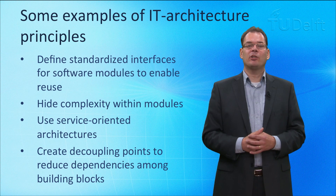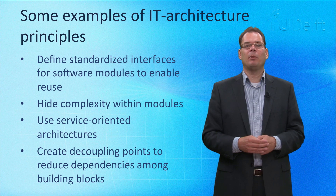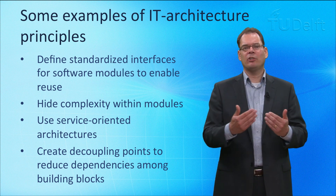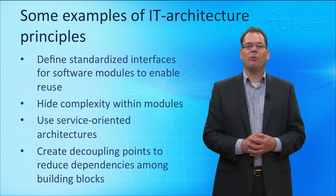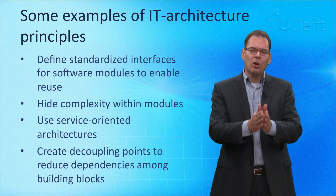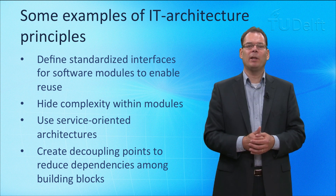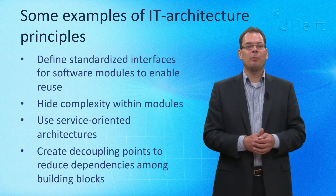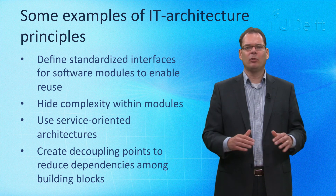Some examples of principles for creating flexibility in IT architectures are the use of standardized interfaces for building blocks. If interfaces do not change, building blocks can be replaced by other building blocks without affecting the system. To ensure that interfaces are stable, the complexities should be within a module. Service-oriented architectures are often used for creating modular architectures. To ensure that building blocks are not too dependent on each other, it is good to include buffers or so-called decoupling points between them. The buffer will store the messages exchanged between building blocks and ensures continuity when one building block is temporarily not functioning. These principles will likely result in more flexibility — but don't fall into the trap of having too many principles, as people will not remember them.